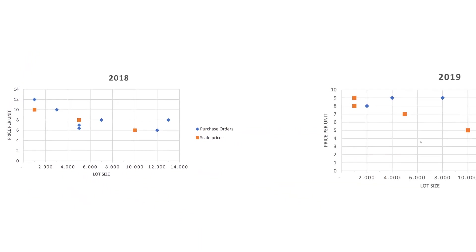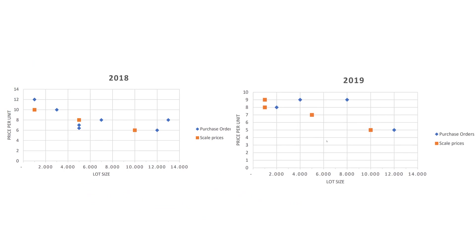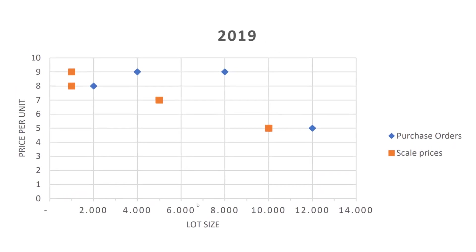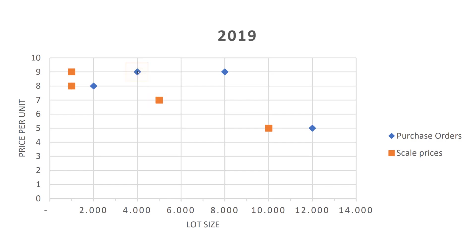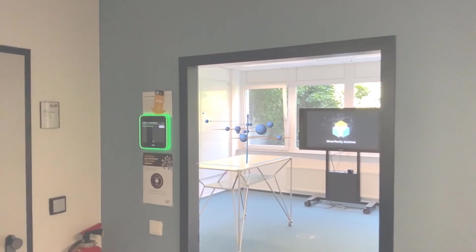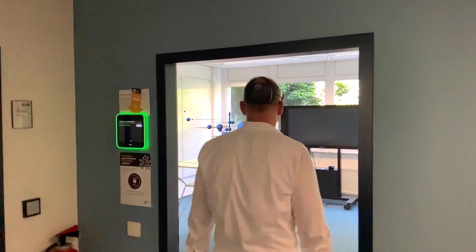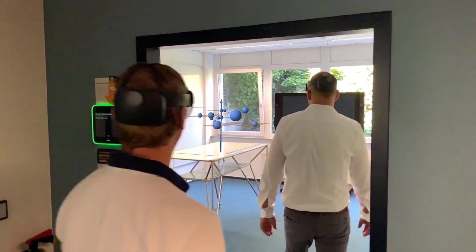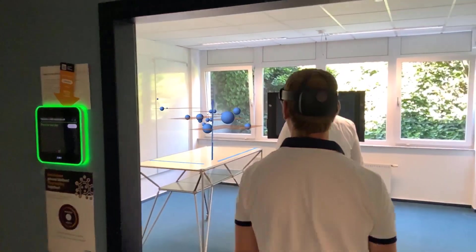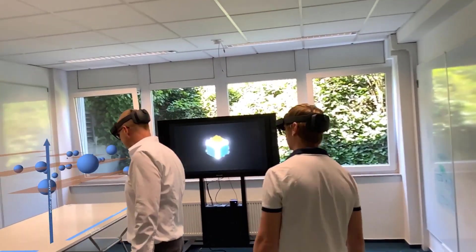In the current solution there is one chart per year. You can see the lot size on the x-axis and the price per unit on the y-axis. Squares indicate negotiated scale prices, diamonds represent purchase orders. Siemens and SAP worked together and developed a solution using Microsoft HoloLens.